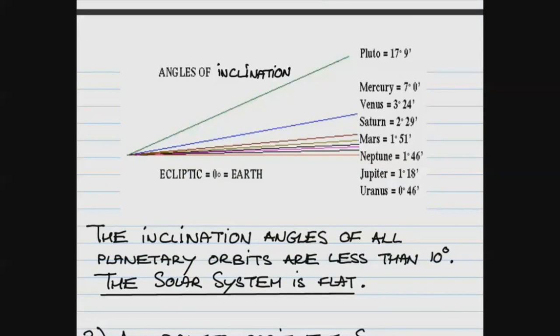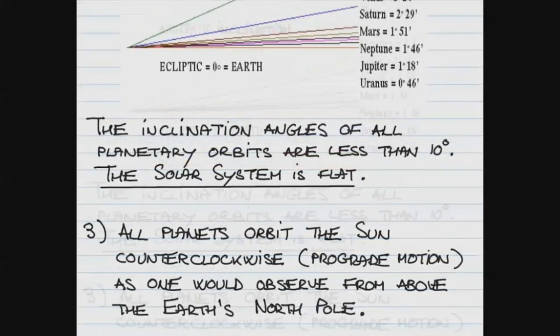So the conclusion is, Pluto, this diagram is probably from the time where students were taught that there are nine planets. But we now know that Pluto is categorized in separate category of dwarf planet. Its inclination angle is quite high. But for eight planets, the inclination angle is less than 10 degrees. And we conclude that the entire solar system is flat.